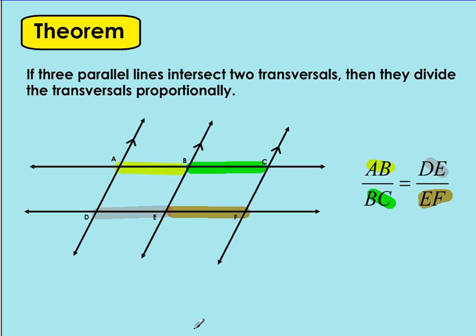Another theorem we have is if you have three parallel lines that intersect two transversals, then they divide the transversals proportionally. So here AB over BC will be equal to DE over EF.